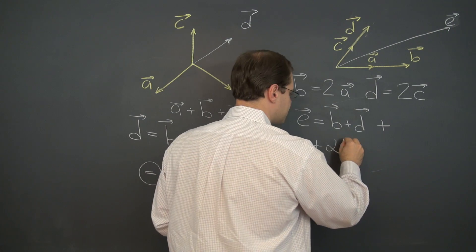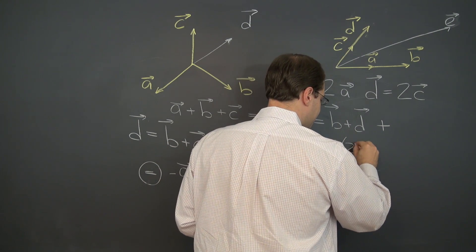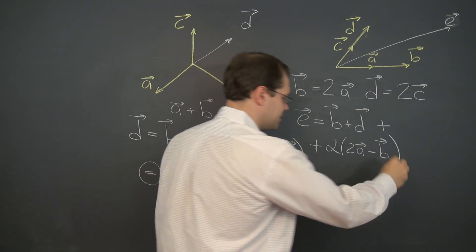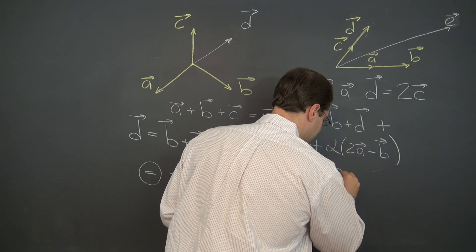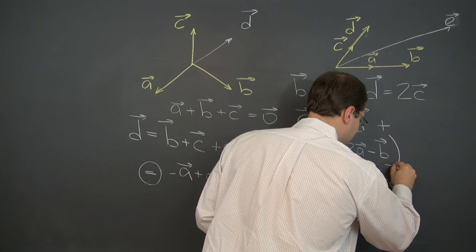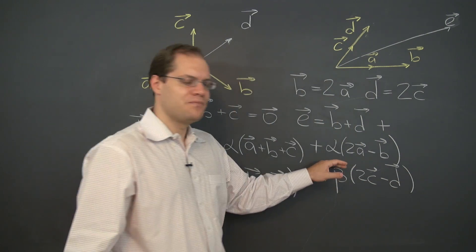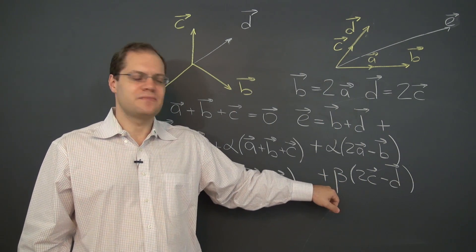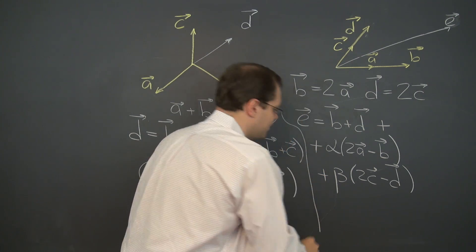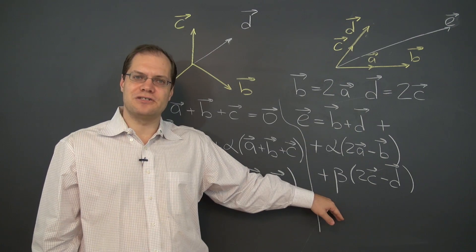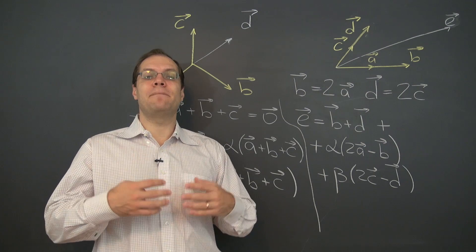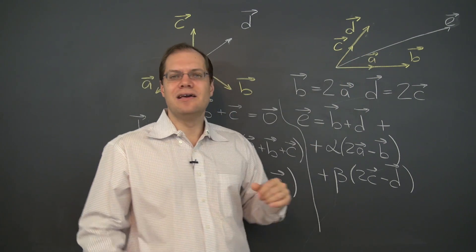alpha times 2a minus b and plus beta times 2c minus d. We needed a new Greek letter, alpha and beta. Now there are two degrees of freedom in the linear combination. There are two degrees of freedom in the expression that captures all possible linear combinations. So the set of linear combinations that represent e is richer.